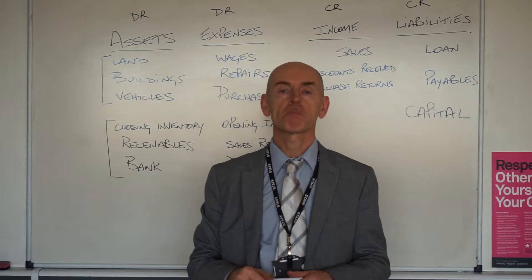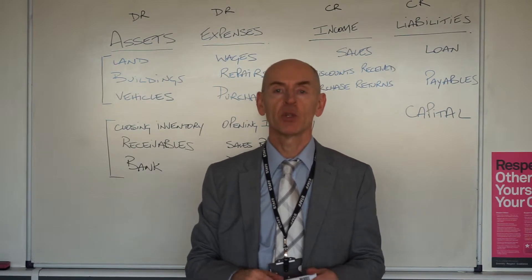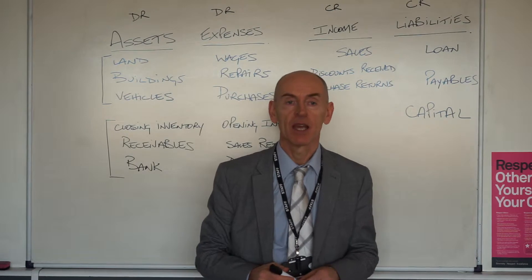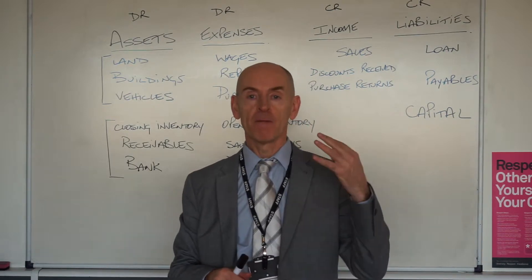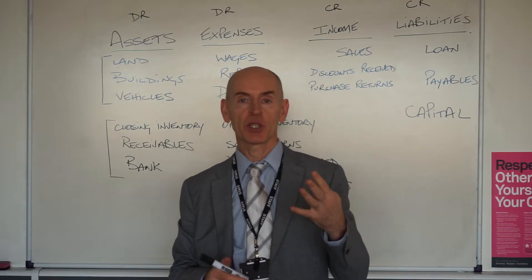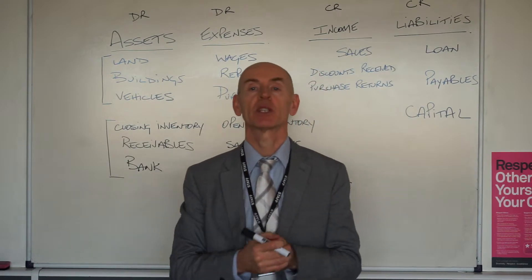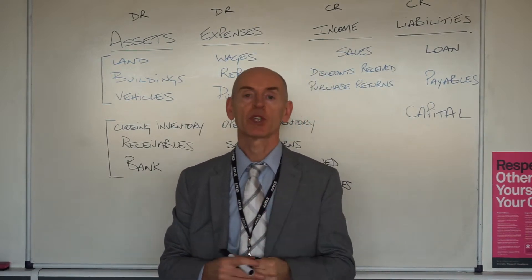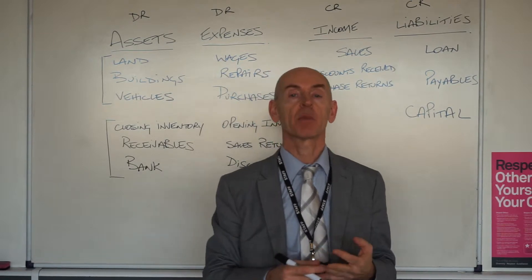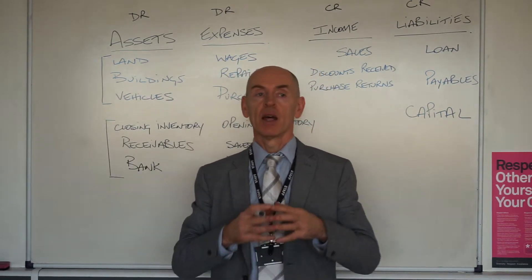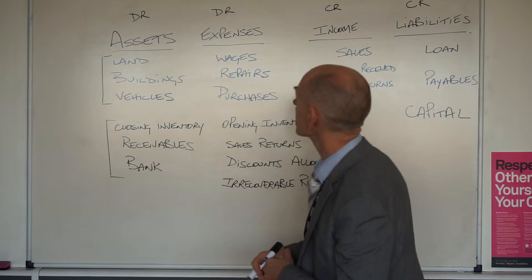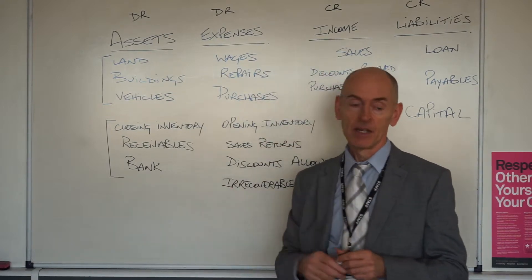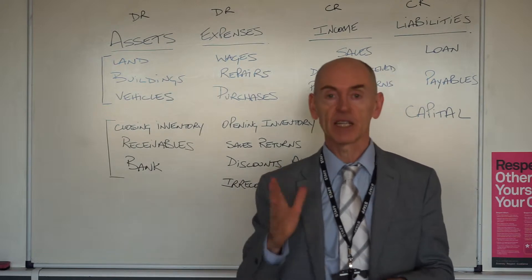In Level 2 AAT bookkeeping, we'll start by talking about the four vital constituents you will need to manipulate to understand the accounting system. The four constituents are assets, liabilities, expenses, and income. So what is an asset? I've got a list here and I've divided the list of assets into two categories.